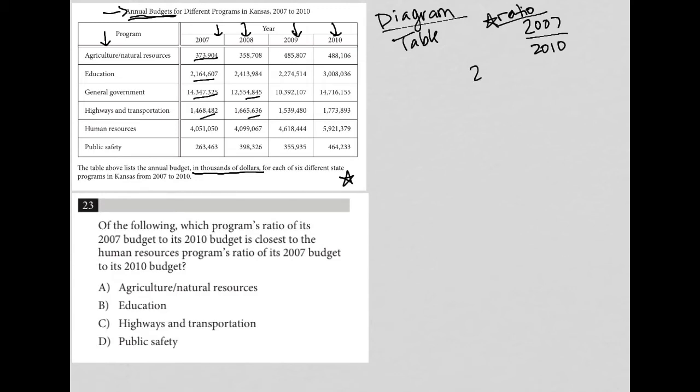We're not going to do this type of ratio on this test. You will never have to solve a question that way. It'll always be fraction form. So I know that the fraction I'm looking for is budget 2007 versus 2010 budget. I want that ratio to be closest to the human resources. So H.R. programs ratio of its 2007 to 2010.